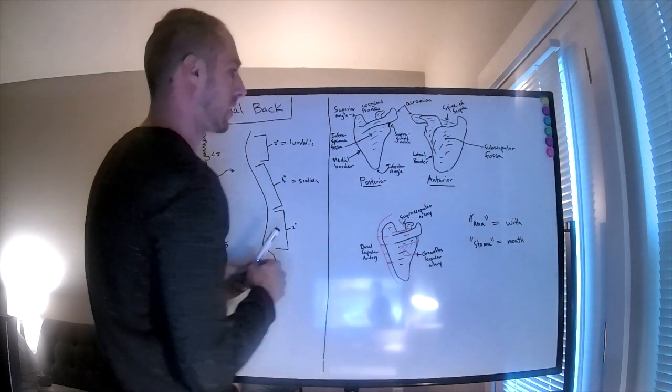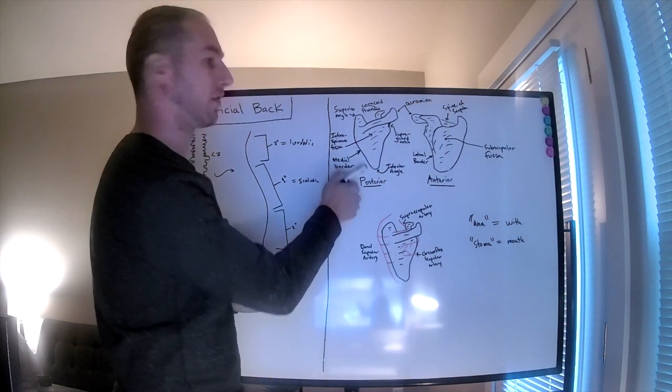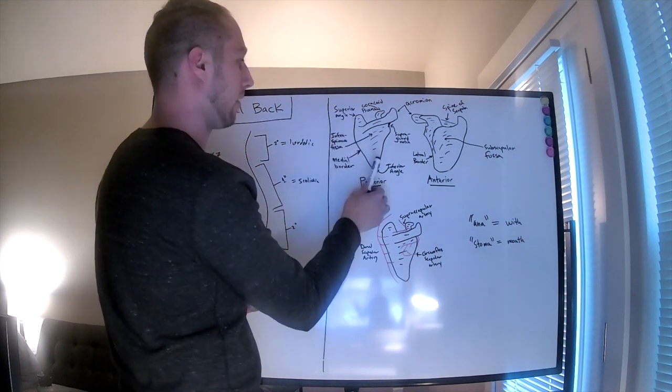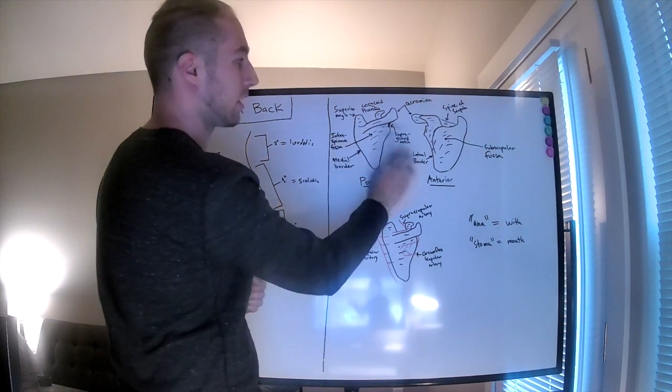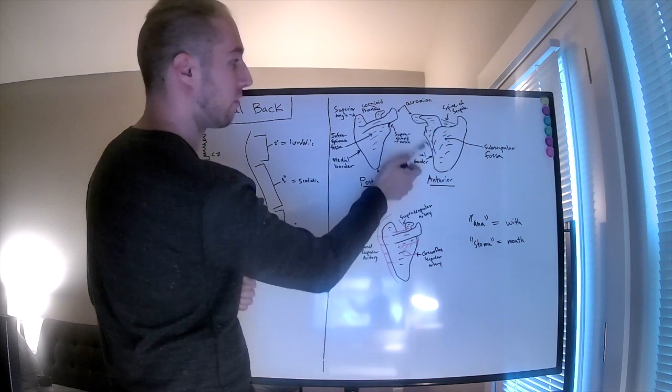When discussing the features of the scapula, you have your medial border right here and the lateral border right here, which is also seen on the anterior view.